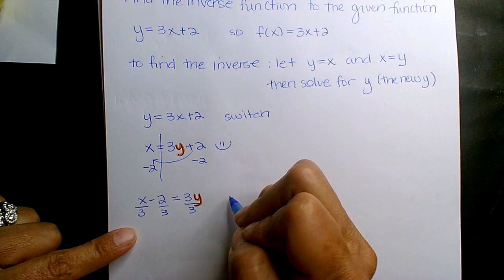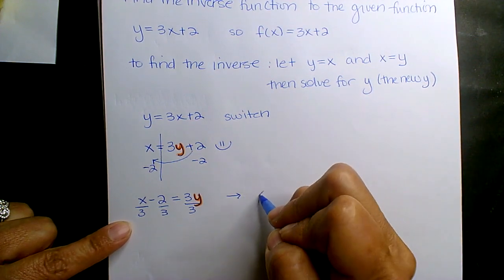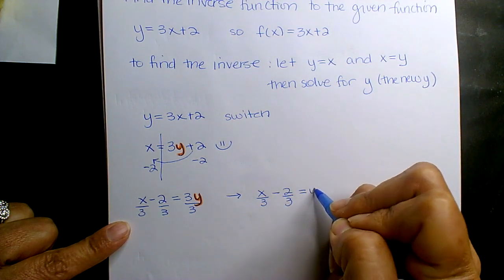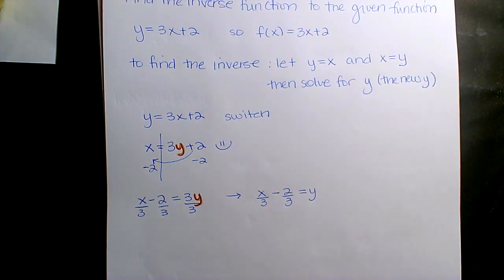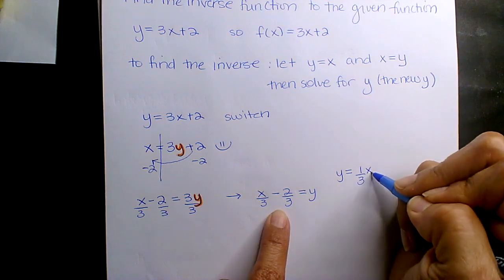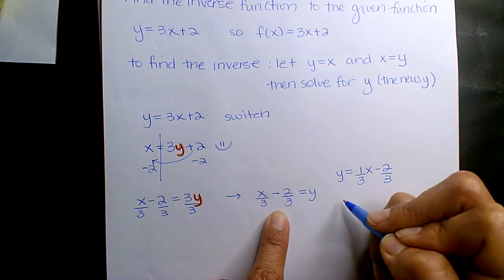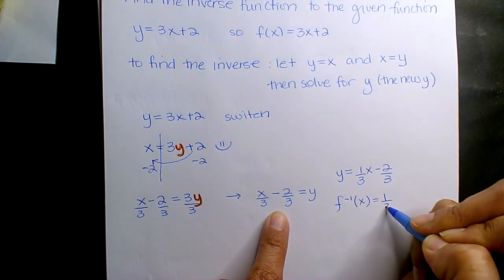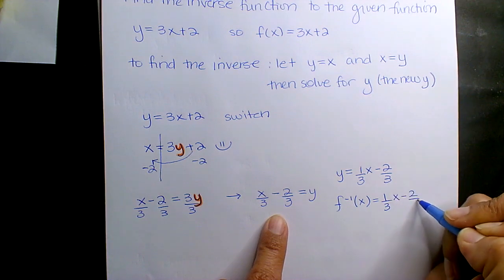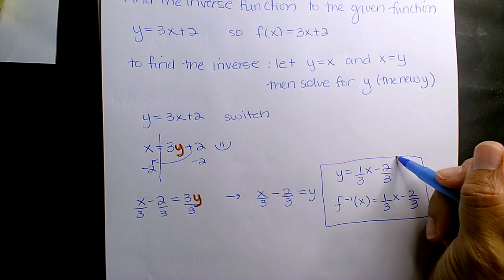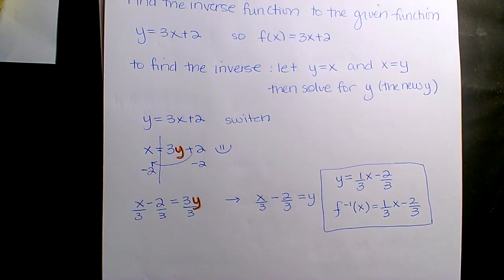And so my new is x over three minus two thirds is equal to y. So if we were to kind of switch it just to make it more presentable, it's y equal, if you want, the one third x minus two thirds, which means my inverse function is that. One third x minus two thirds. And that's your inverse function. That's it.